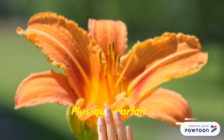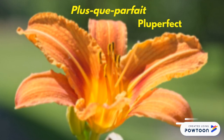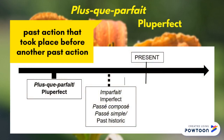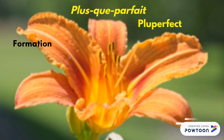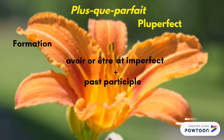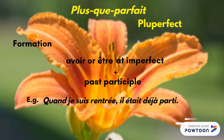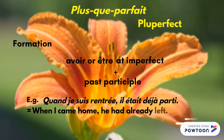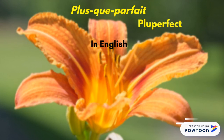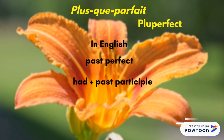The first one is the plus-que-parfait, or pluperfect tense. It indicates a past action that took place before another past action. To form the pluperfect, you conjugate the auxiliary avoir or être at the imperfect and add the past participle of the verb. For instance, quand je suis rentré, il était déjà parti — when I came home, he had already left. In English, you translate the plus-que-parfait with the past perfect: had plus past participle.